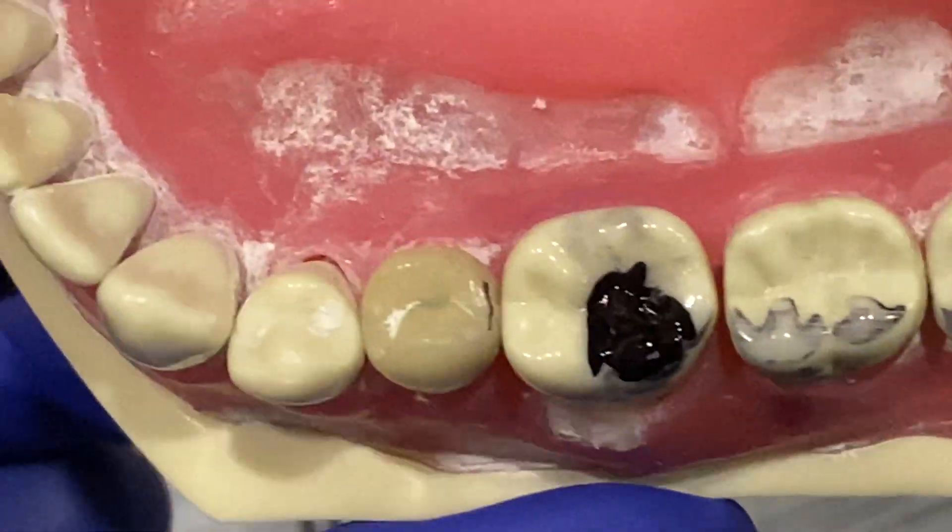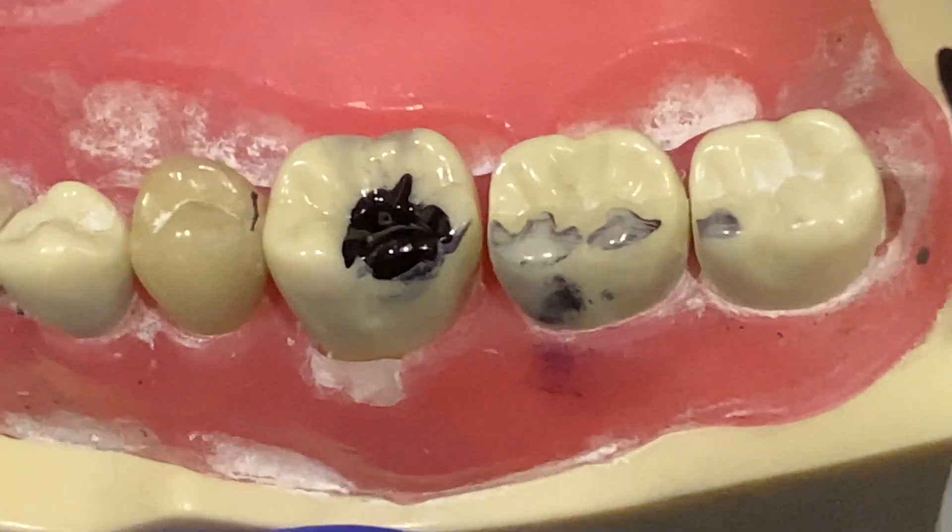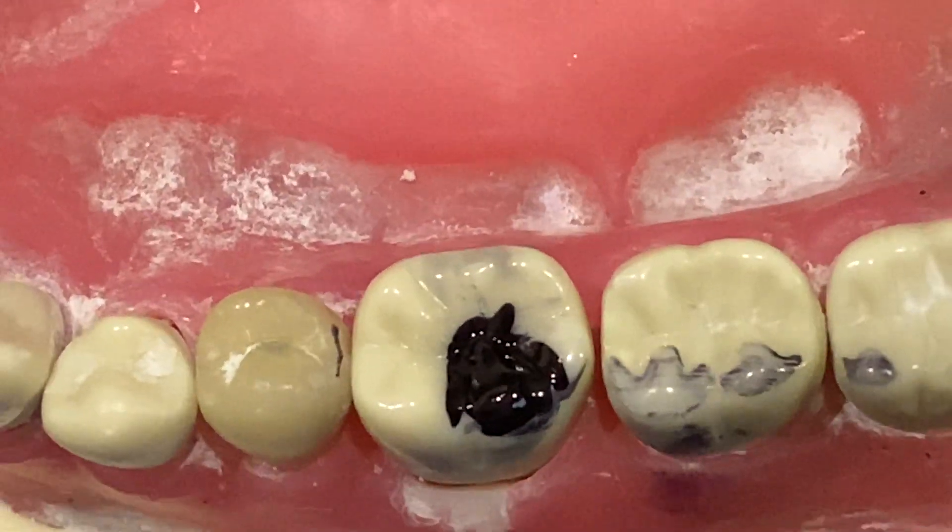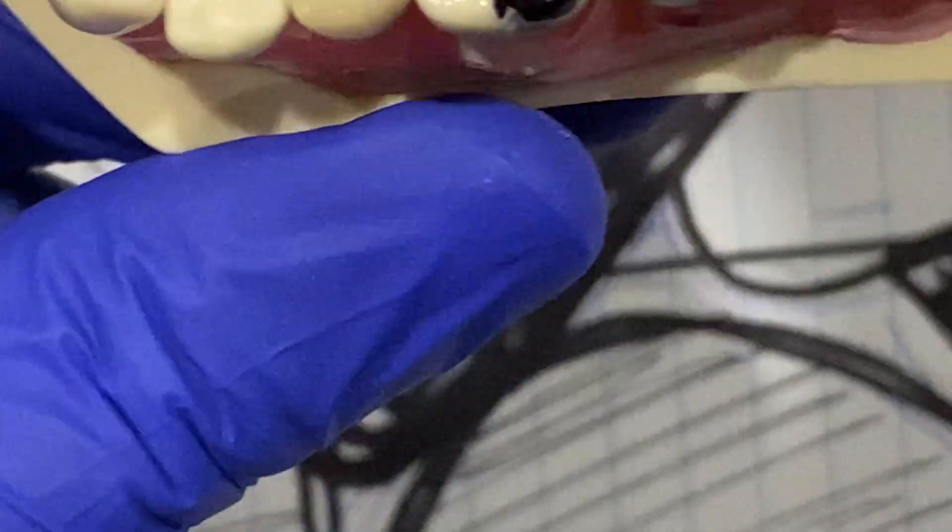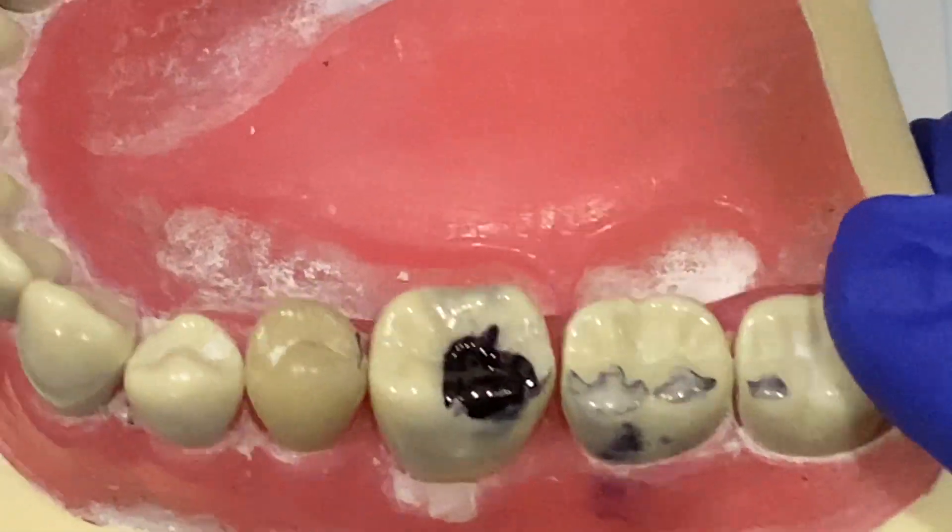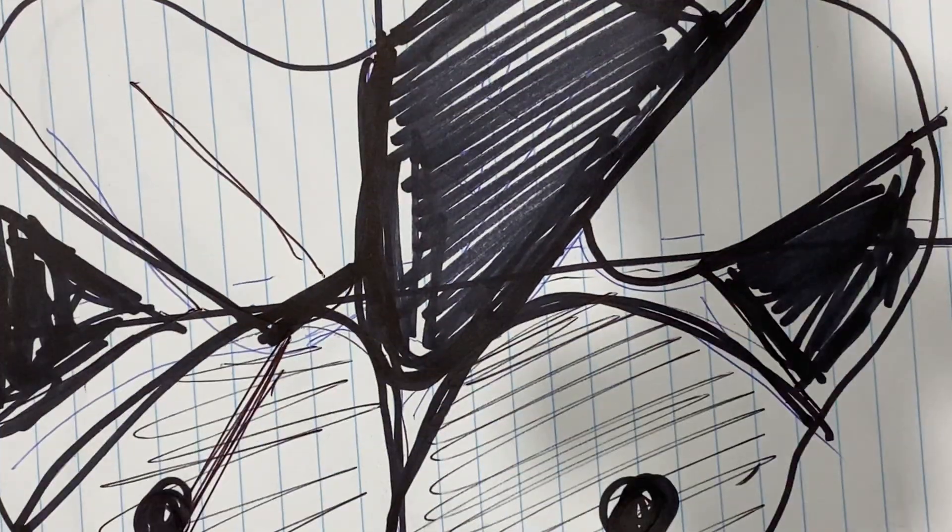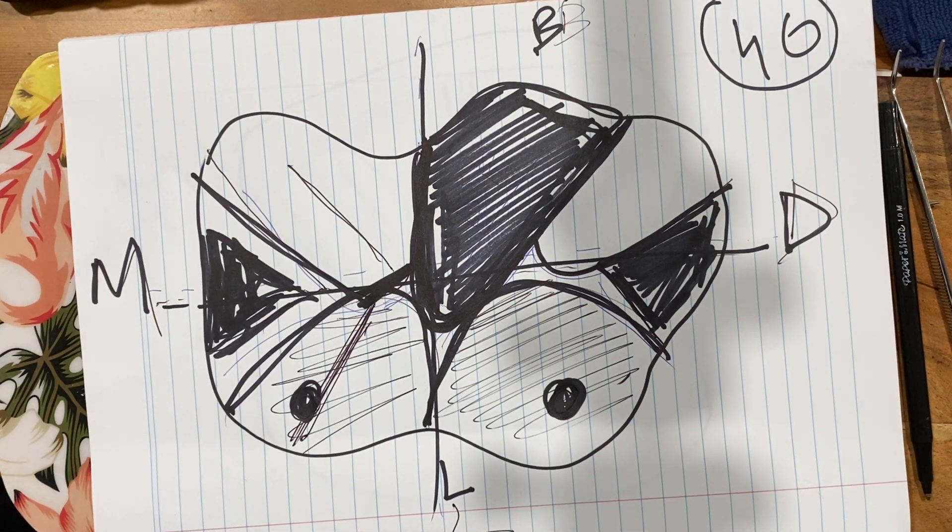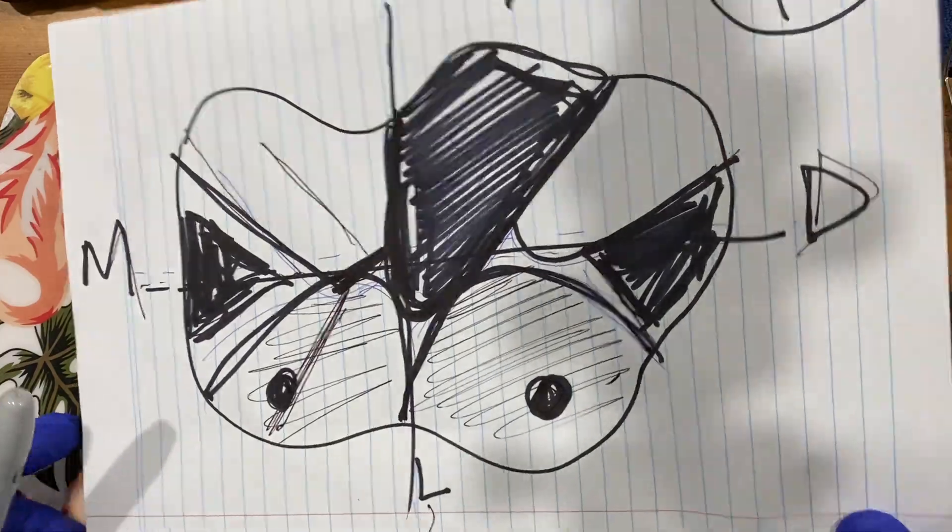And then what happens is the other two cusps start to divide, and that's very important. Look at your actual natural tooth and you will see if you get this A right, making sure it crosses the midline on both sides. If you get your A right, your whole anatomy gets better and everything starts to fall. If you don't get this A right, everything just starts to distort.